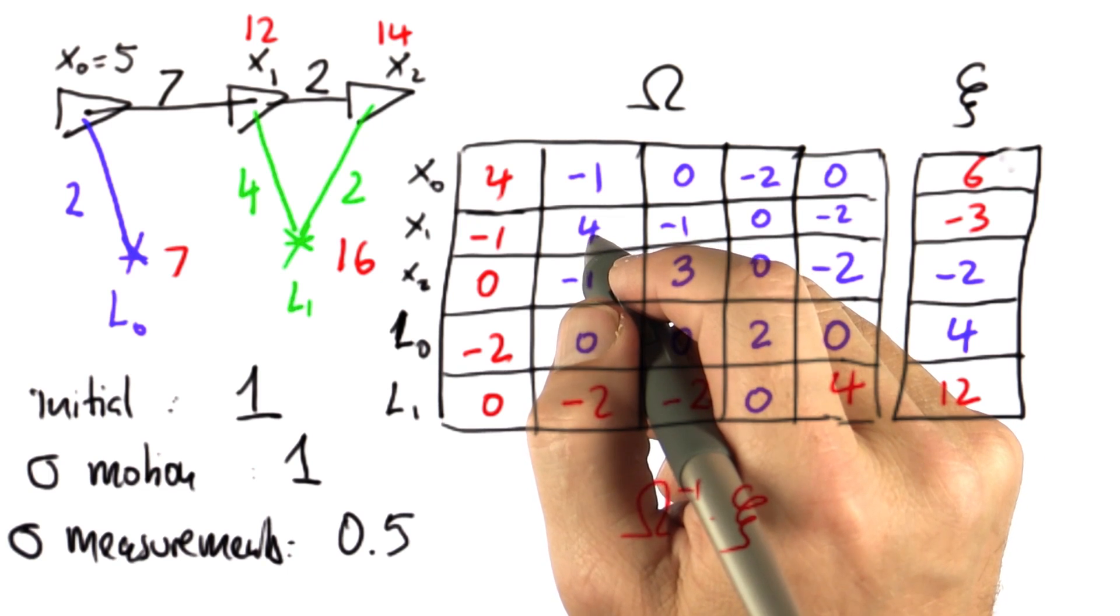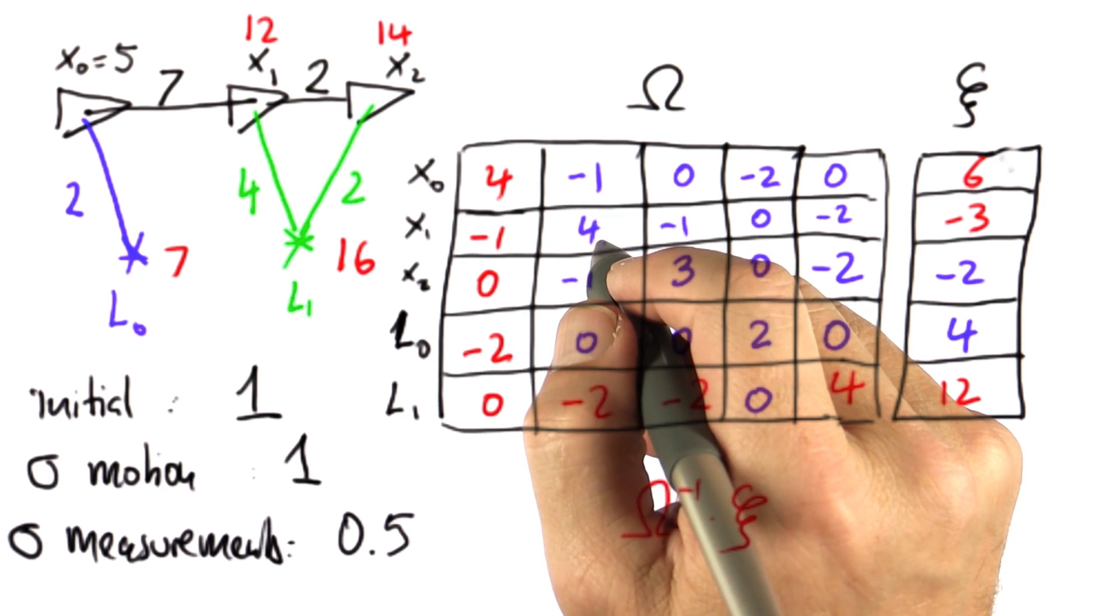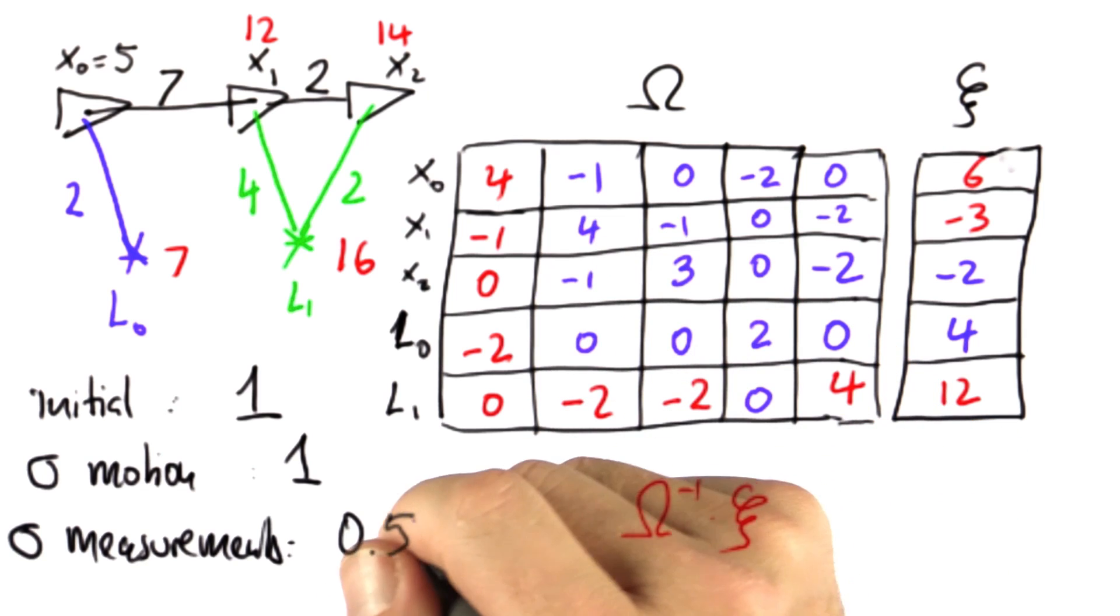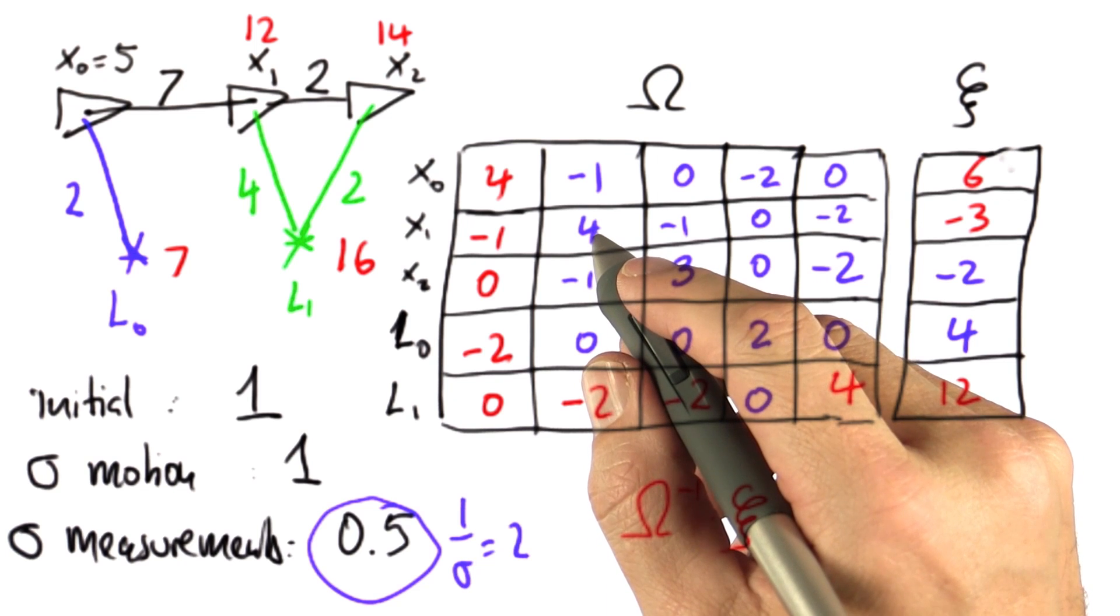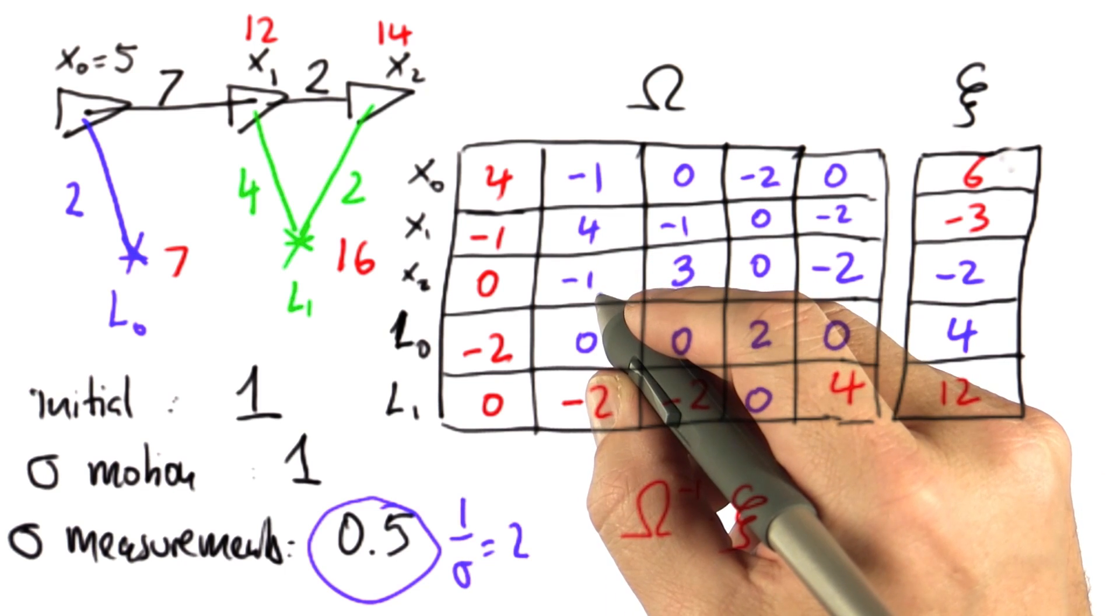But we also had one observation in x1. We incremented by two because of the measurement strength, 0.5. One over that is two, so when we added the measurement, we ended up with four.